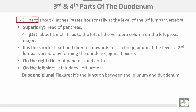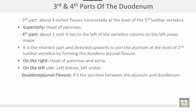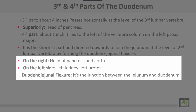The third part, about four inches, passes horizontally at the level of the third lumbar vertebra, with the head of the pancreas superiorly. The fourth part, about one inch, lies to the left of the vertebral column on the left psoas major muscle. It is the shortest part and is directed upward to join the jejunum at the level of the second lumbar vertebra, forming the duodenojejunal flexure. On the right is the head of the pancreas and the aorta.